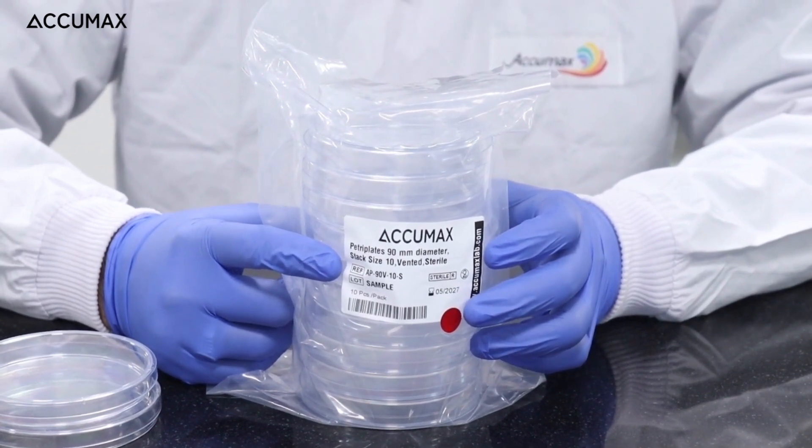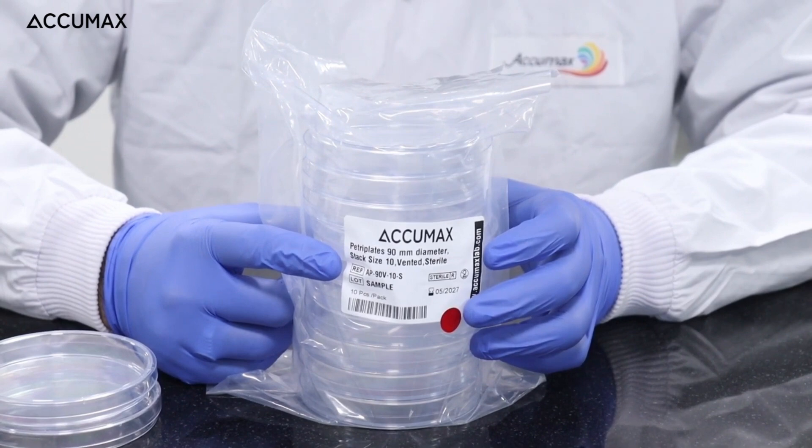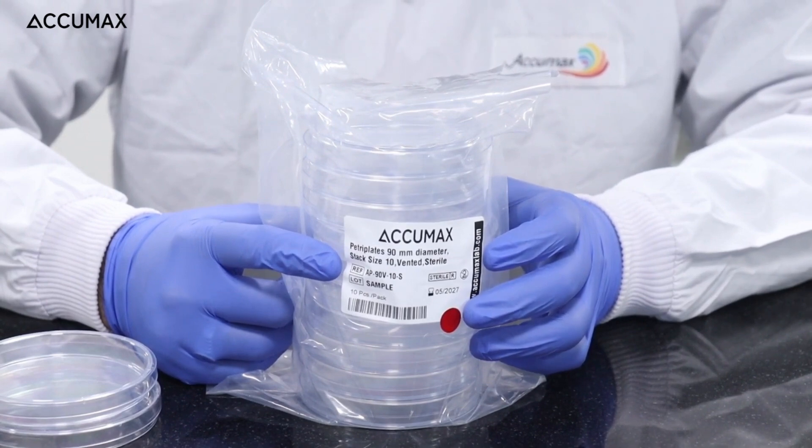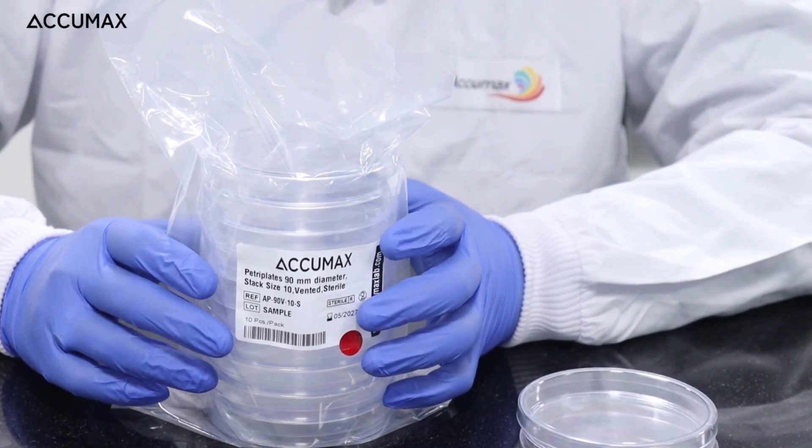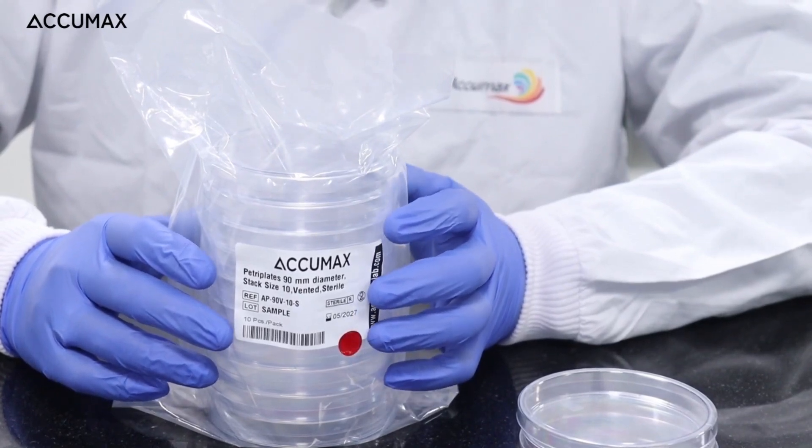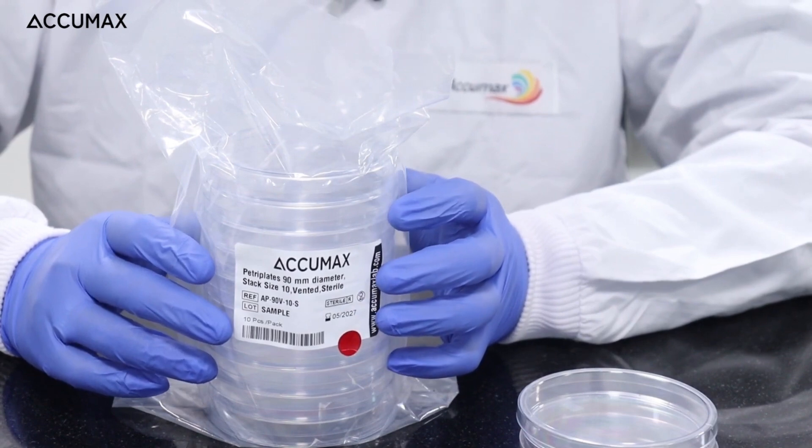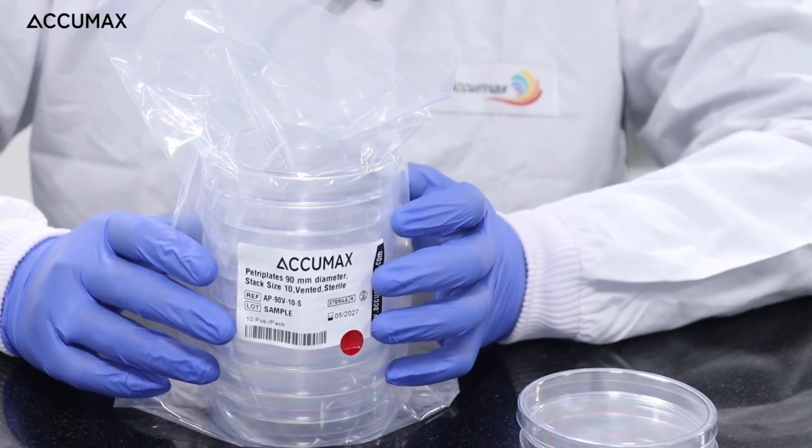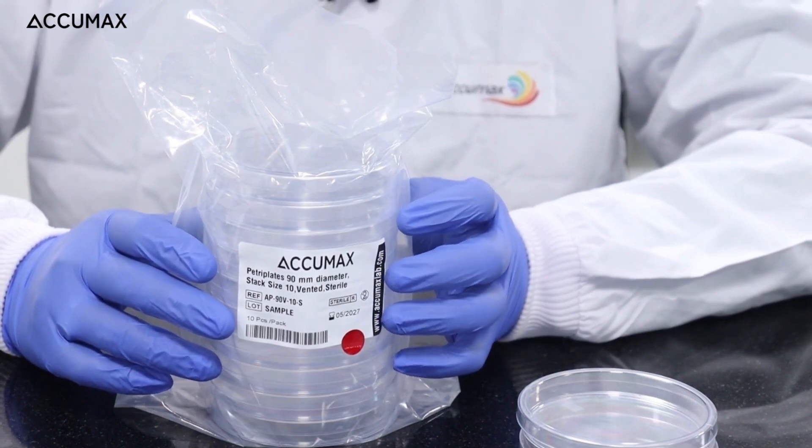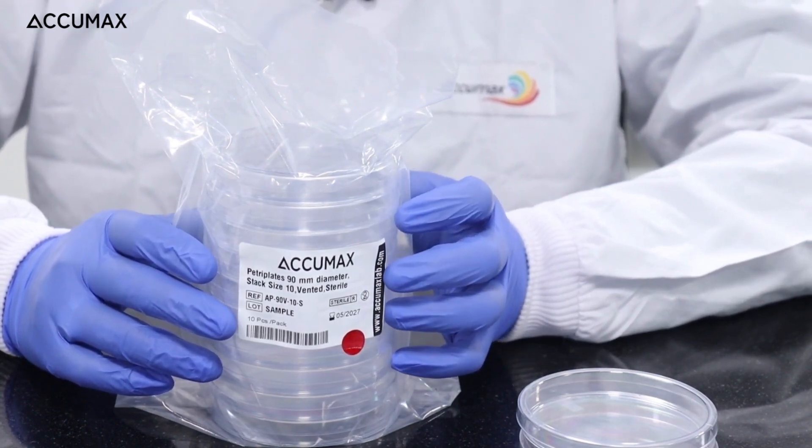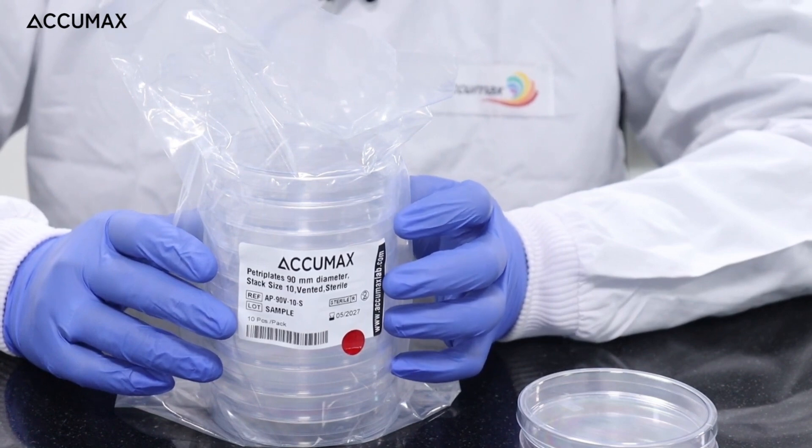As you can see, the sterility assurance level is the crucial point when you are using these petri plates for pharmaceutical applications. Sterility assurance level of Accumax petri plates that are sterile is 10 to the minus 6. That indicates there's a chance of only one organism out of one million organisms surviving the sterilization process.